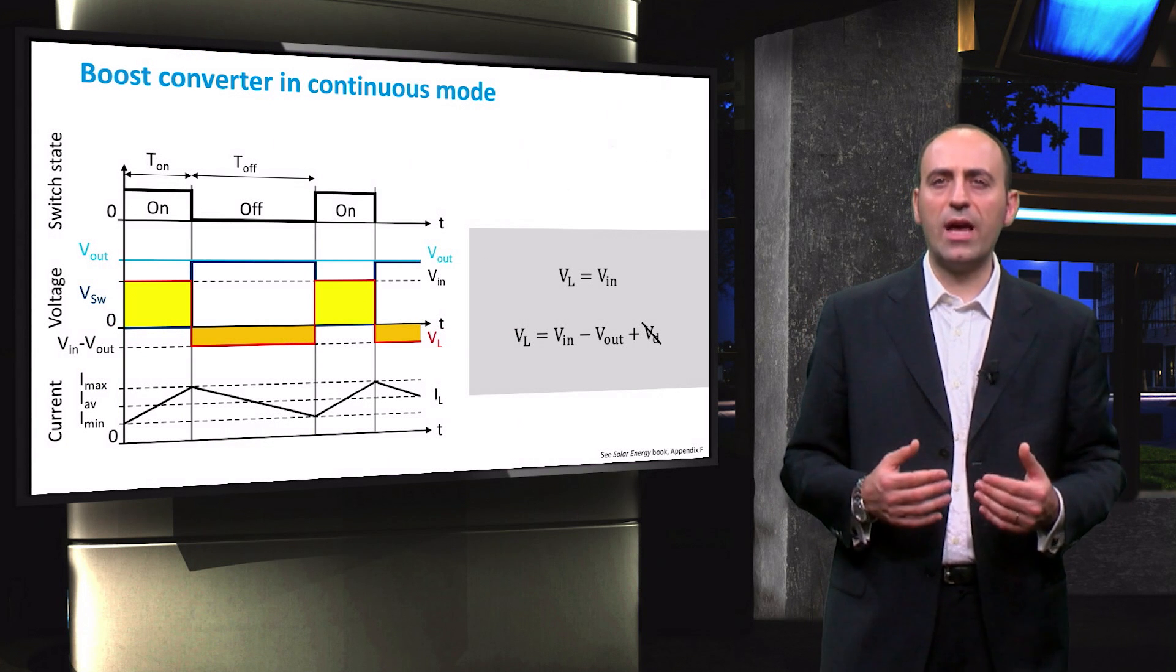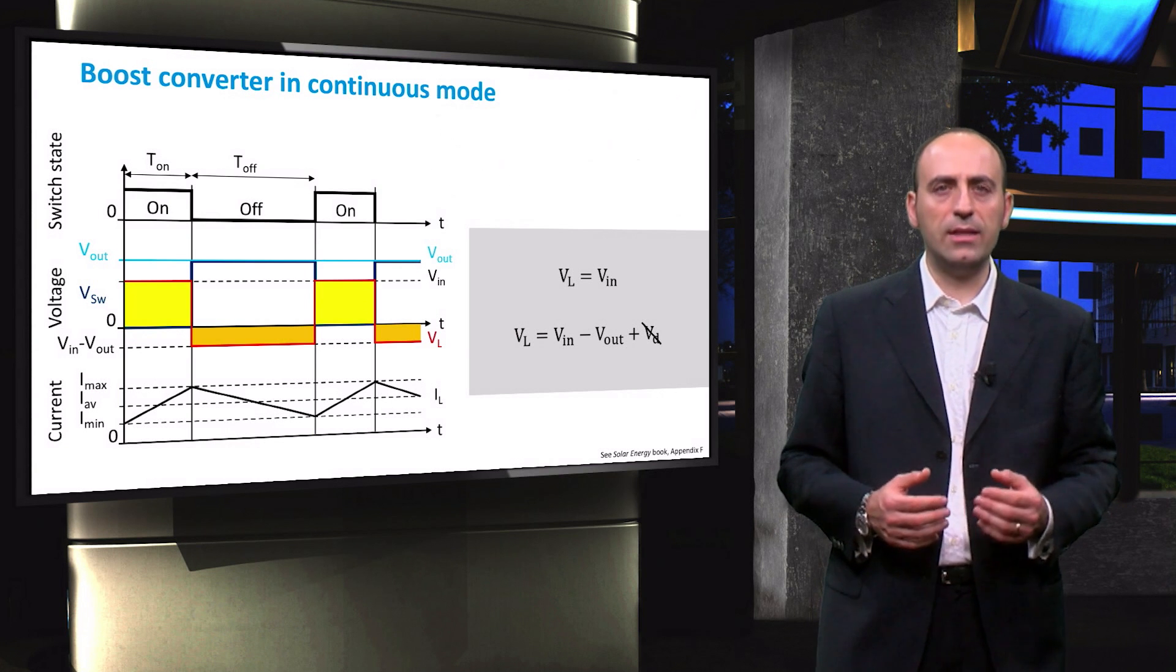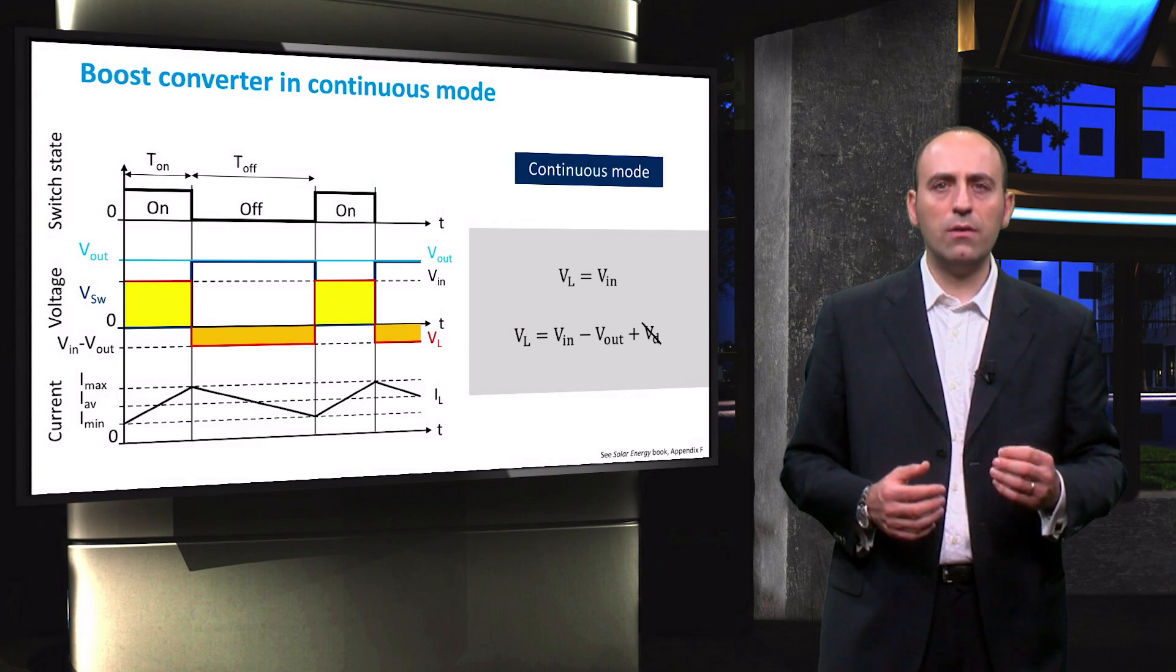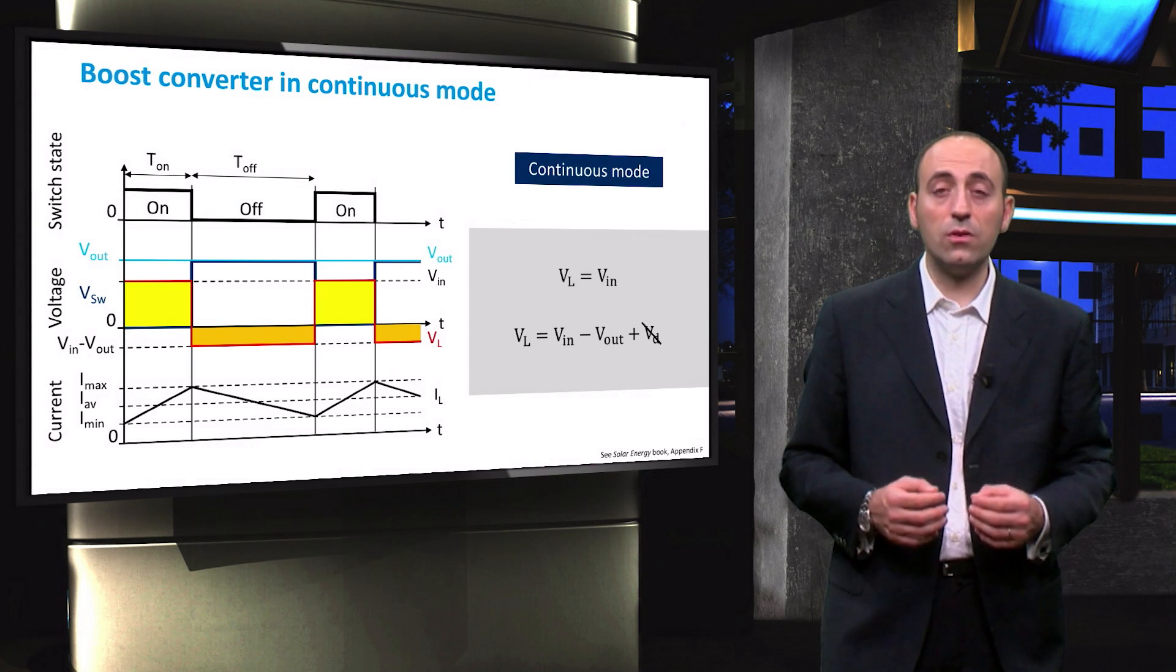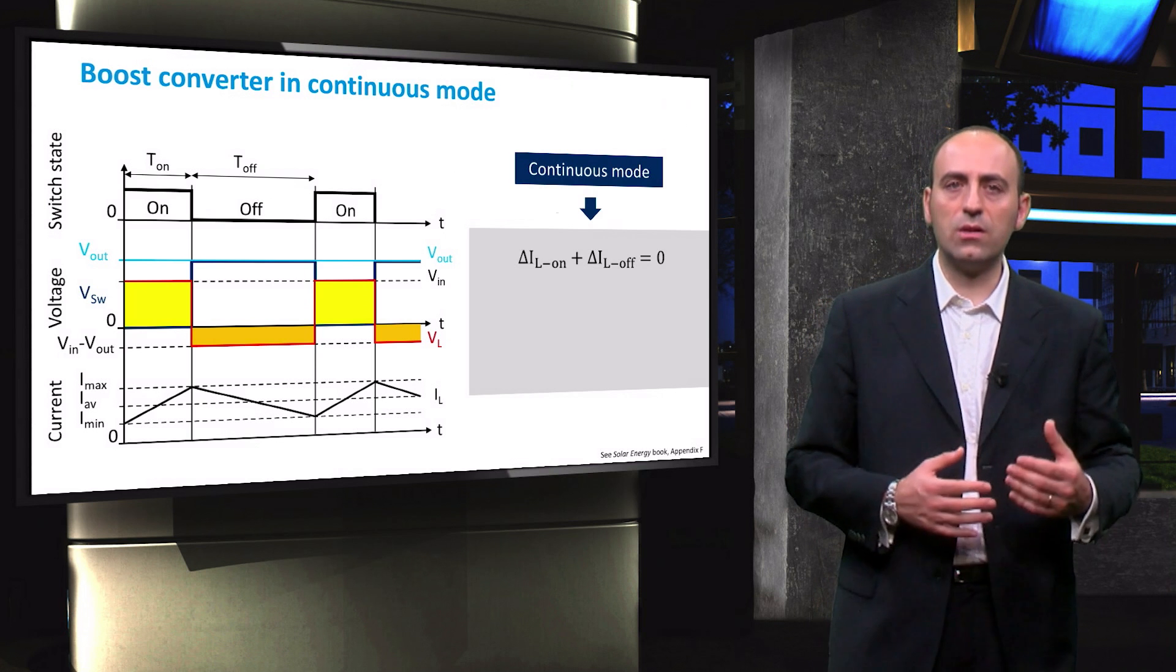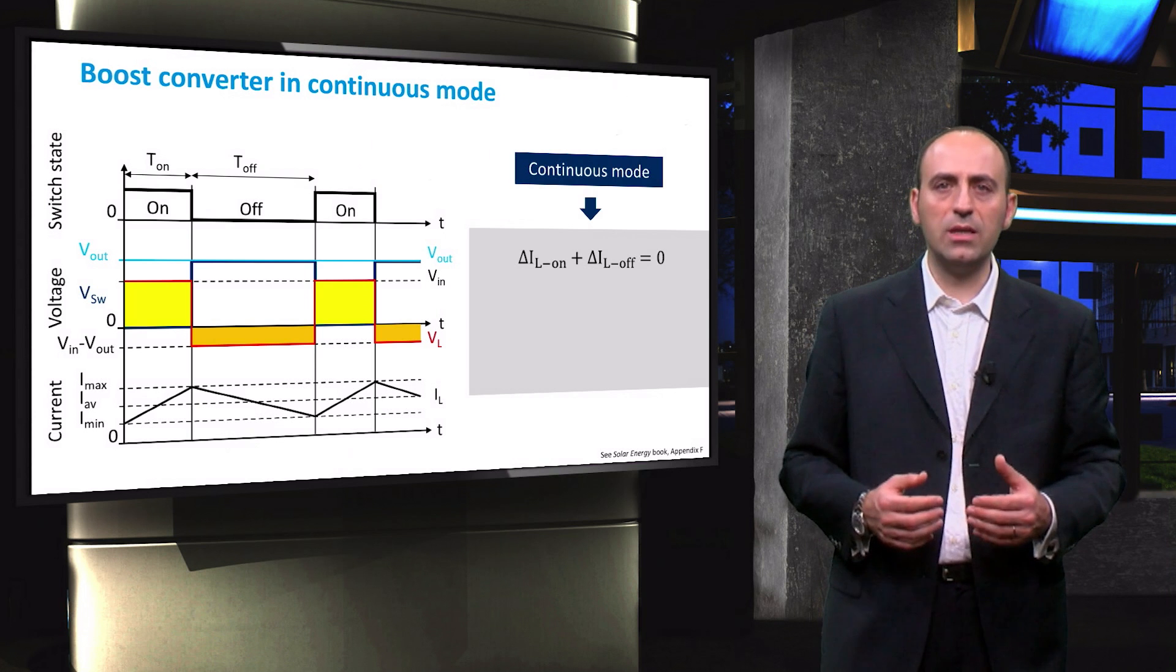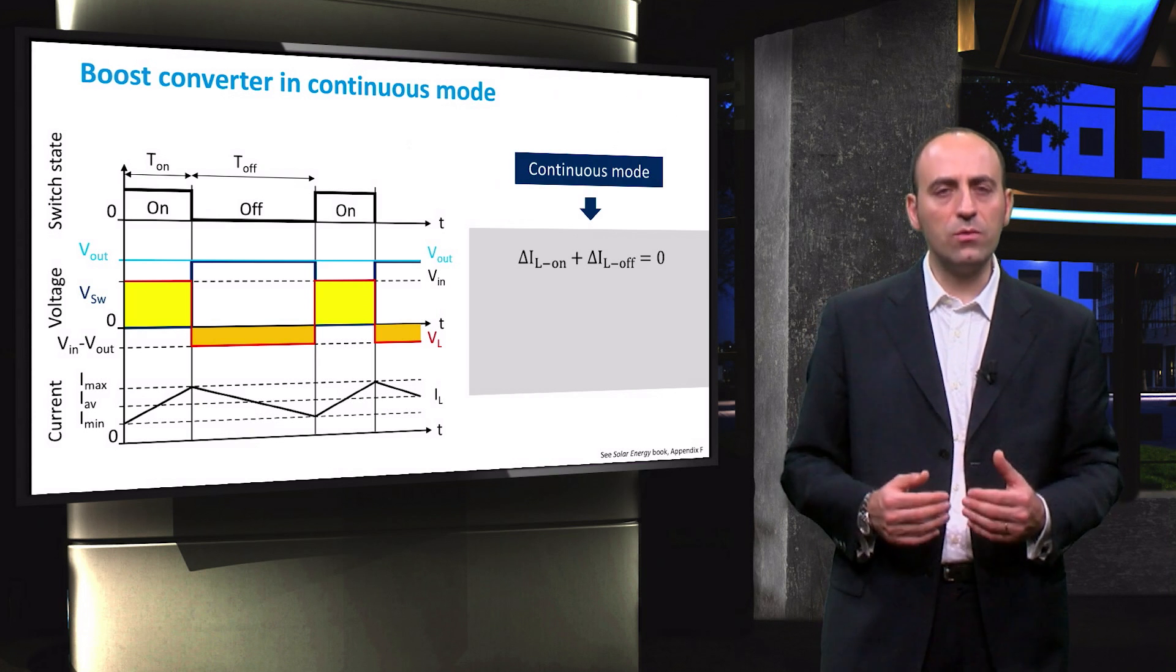So after a certain amount of cycles, the boost converter reaches a steady state operation, and in this continuous mode, the flow of current across the inductor is equal to 0. Therefore, we can write the equation that relates the current variation during ON mode and OFF mode, respectively the increase and decrease of current.